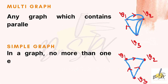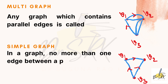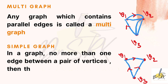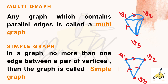What is a multi-graph? A graph which contains parallel edges is called a multi-graph. Looking at the diagram, in this graph parallel edges occur between V1 and V2, and between V2 and V3. That is why this graph is known as a multi-graph.